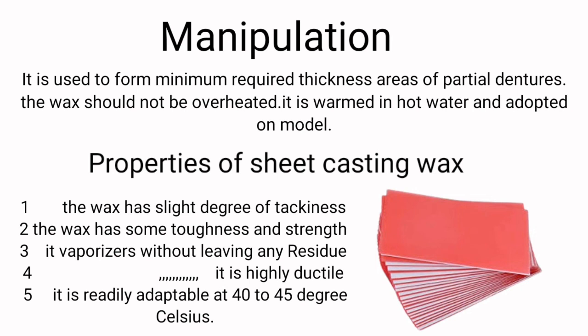Manipulation: sheet casting wax is used to form minimum required thickness areas of partial dentures. The wax should not be overheated; it is warmed in hot water and adapted on the model. Properties of sheet casting wax: it has a slight degree of tugginess; it has some toughness and strength; it vaporizes without leaving any residue; it is highly ductile; and it is readily adaptable at 40 to 45 degrees Celsius.